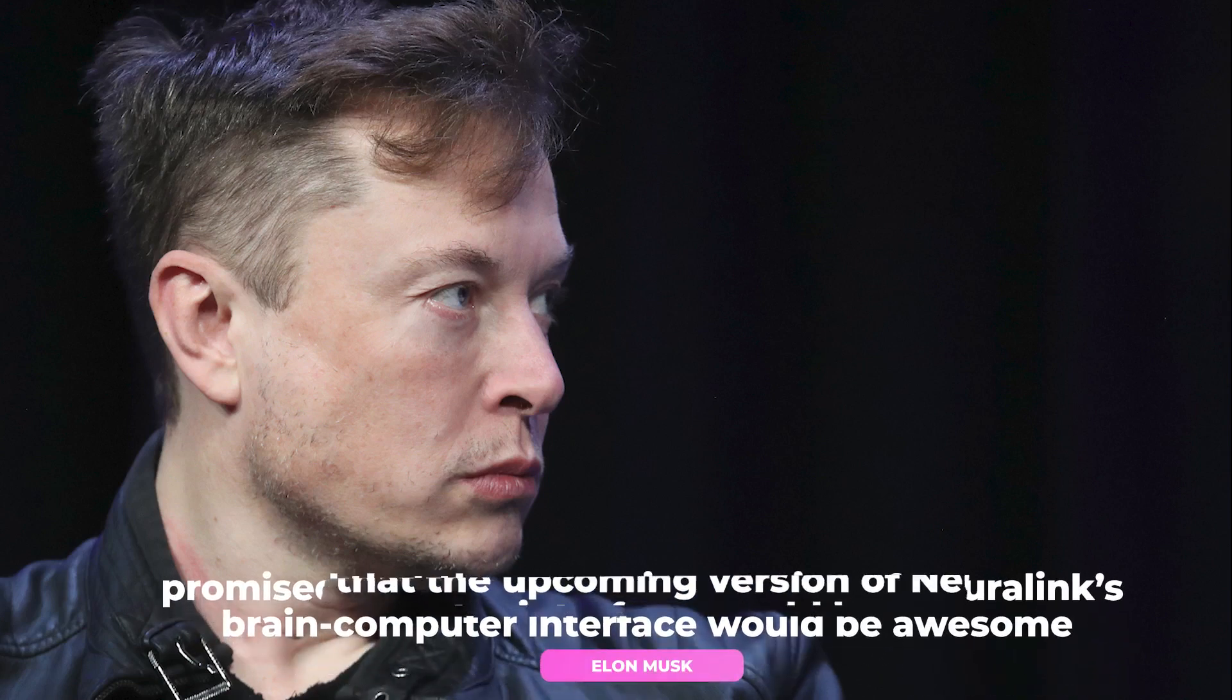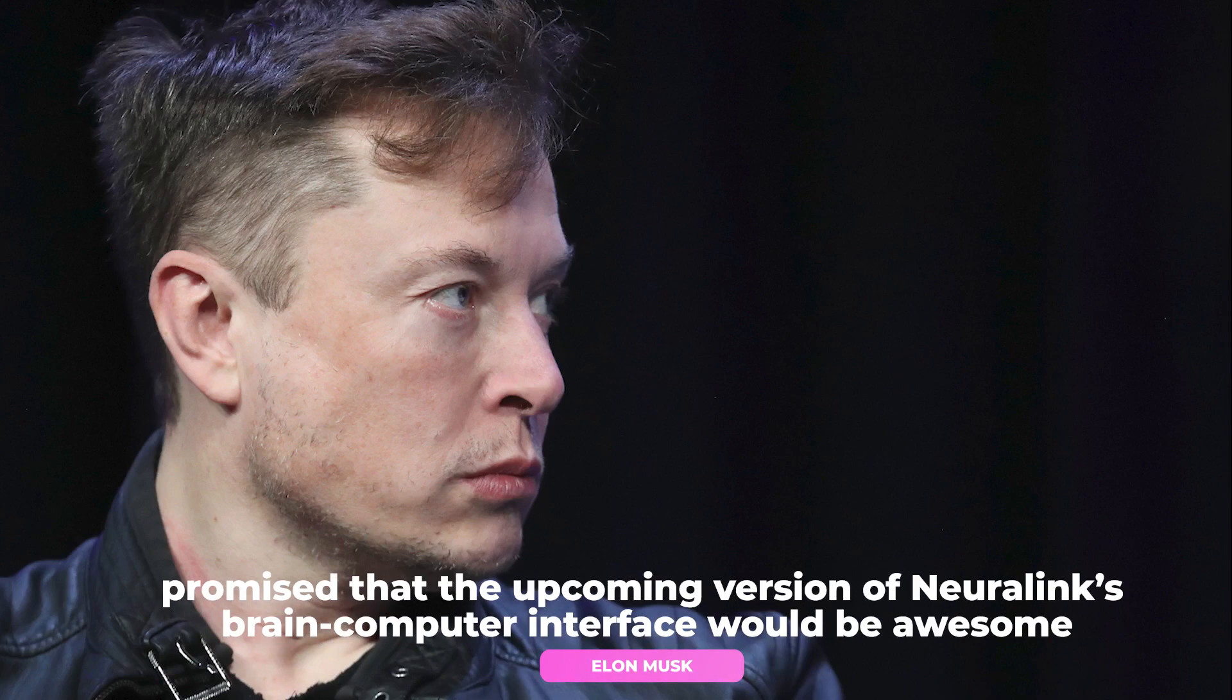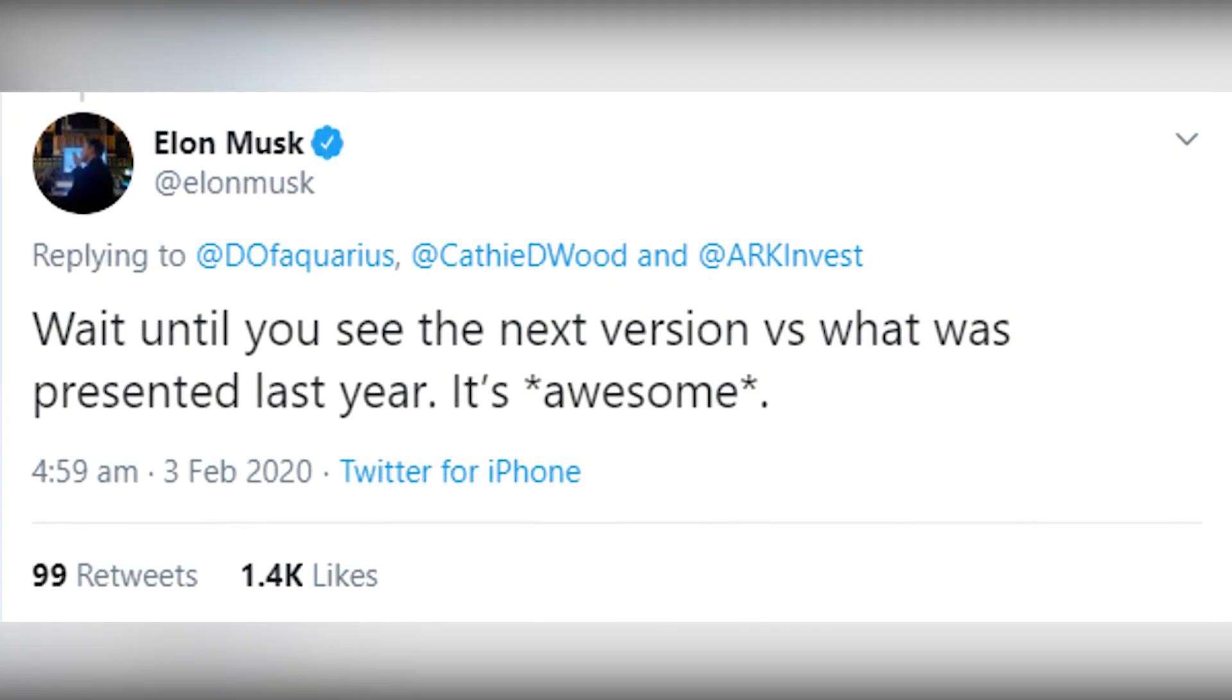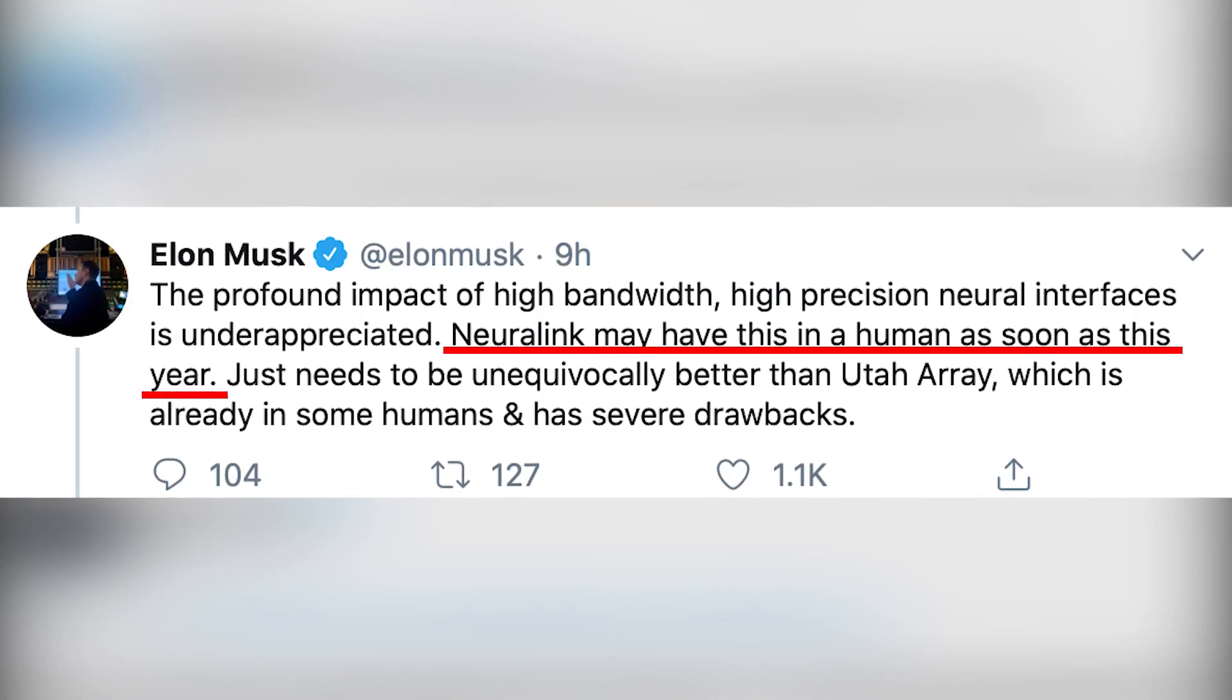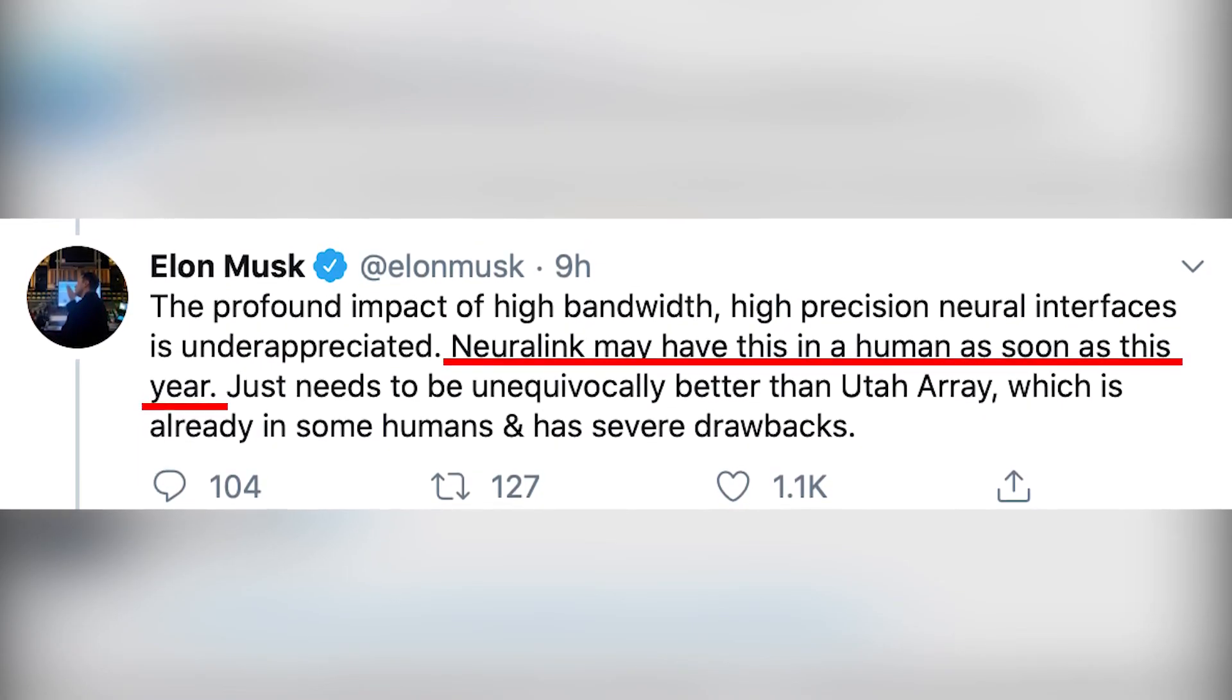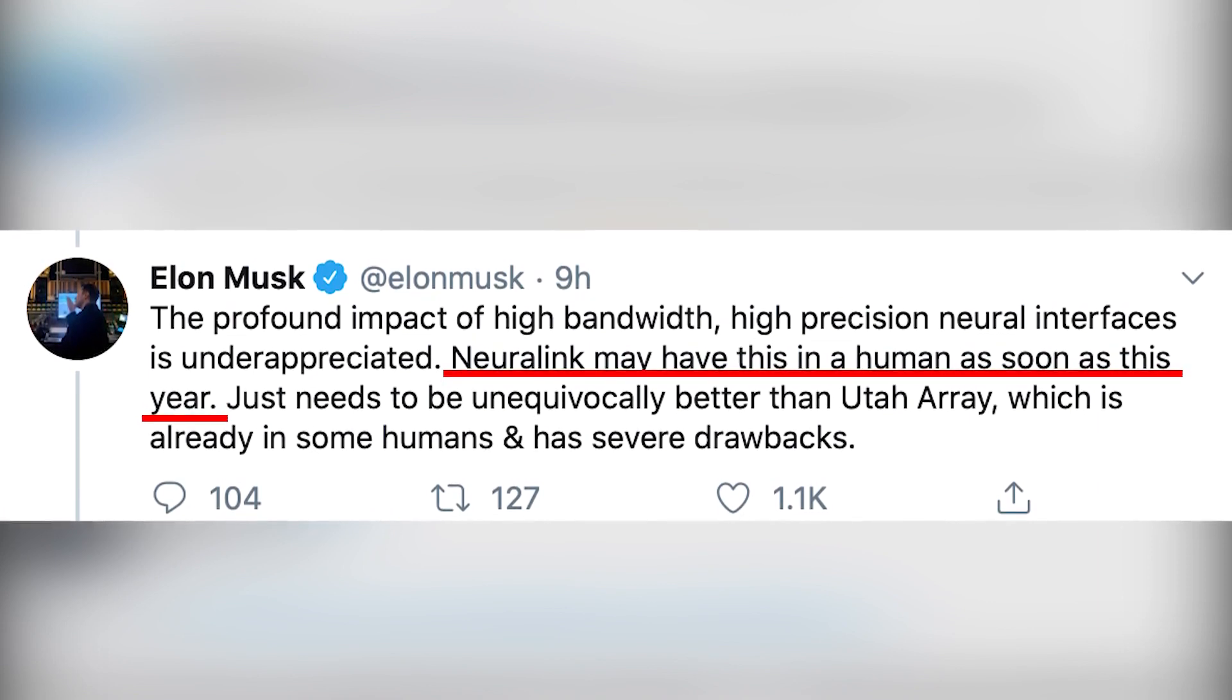Although it is unclear what exactly Neuralink is working on, Musk, in a tweet earlier this year, promised that the upcoming version of Neuralink's brain-computer interface would be awesome. He tweeted: Wait until you see the next version versus what was presented last year. He further tweeted: Neuralink may have this in a human as soon as this year.